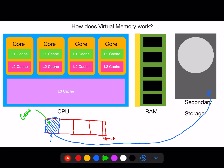Now let's say we finished playing the game and wanted Word back up again. Word is then taken from secondary storage, something else is swapped out — maybe the game this time — and Word is put back in so we can use it. Sections of RAM are swapped out back into secondary storage and held there temporarily so there can be space in RAM for more programs to be open.